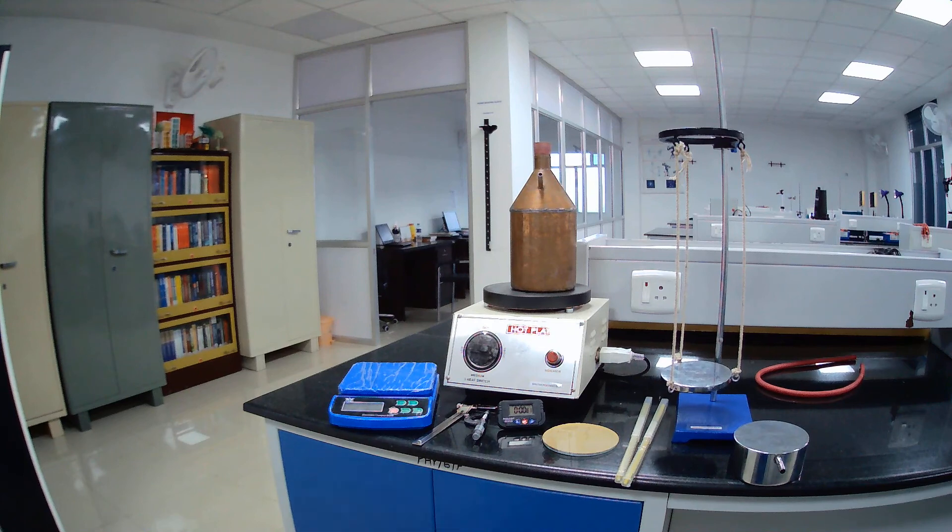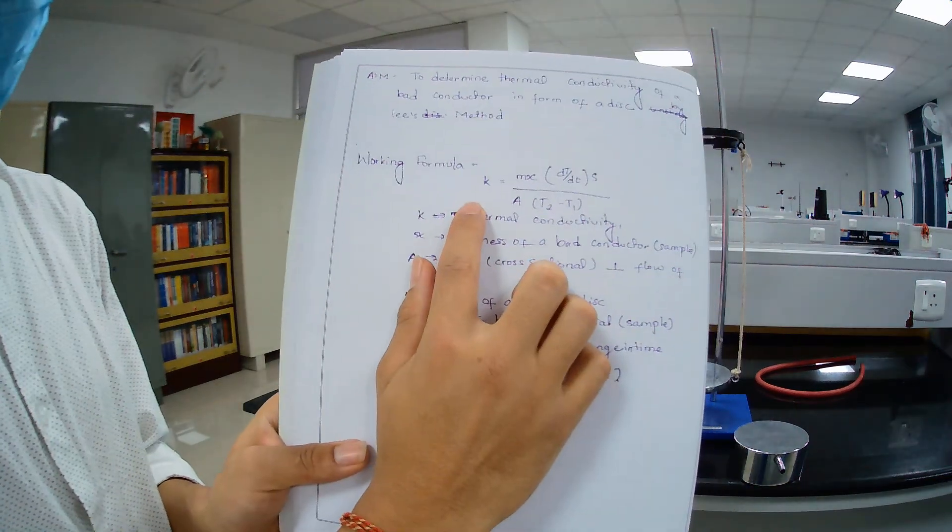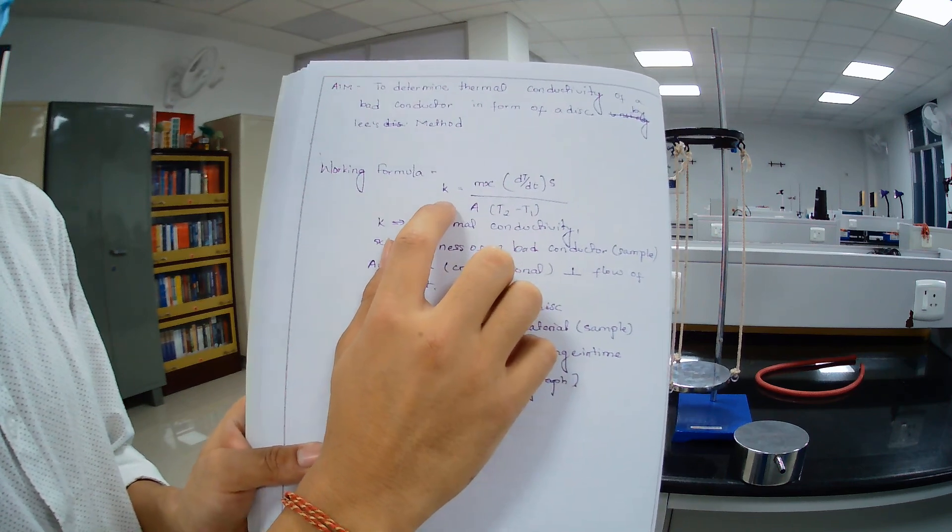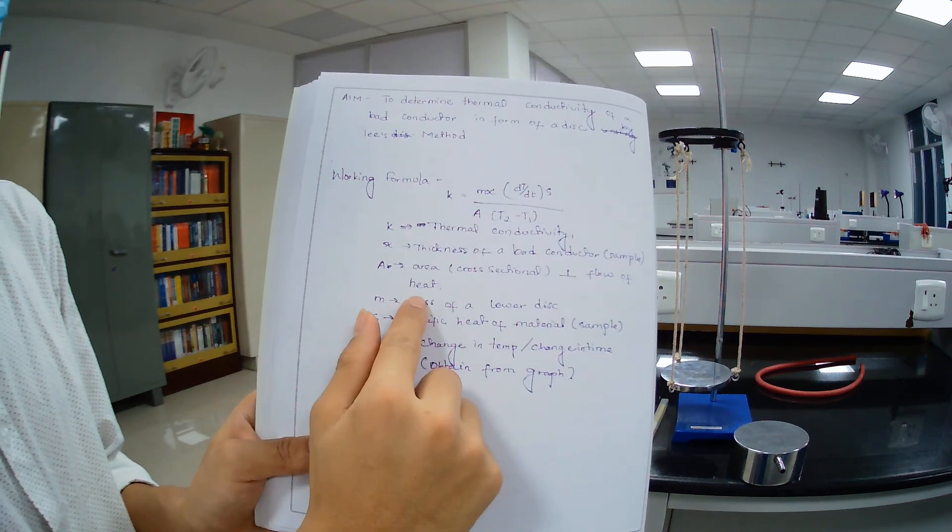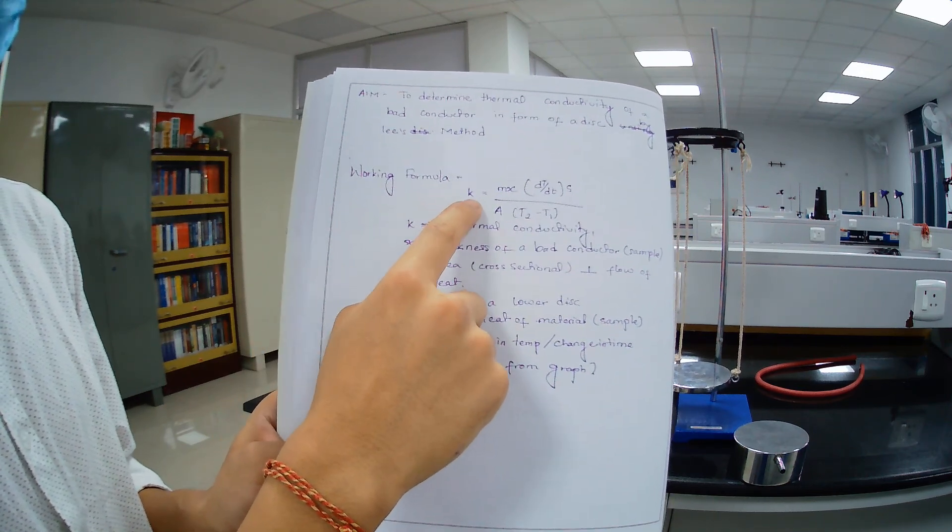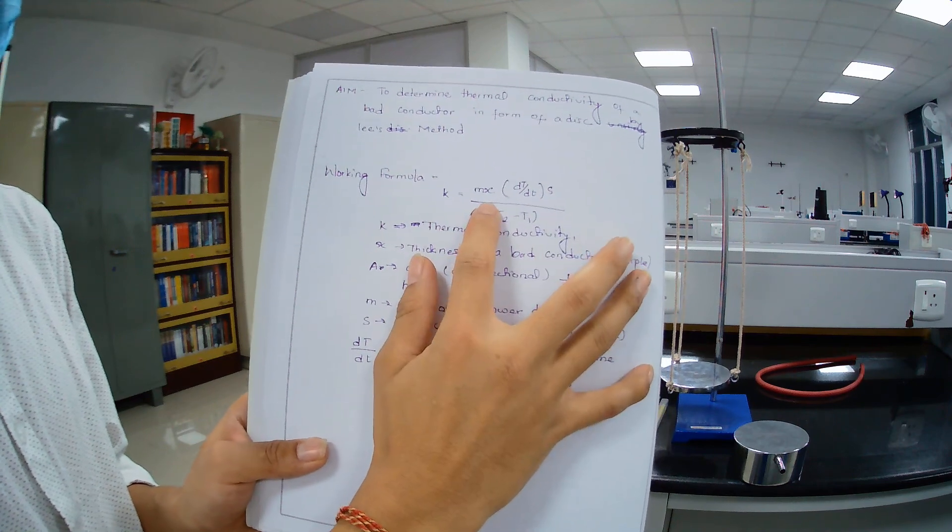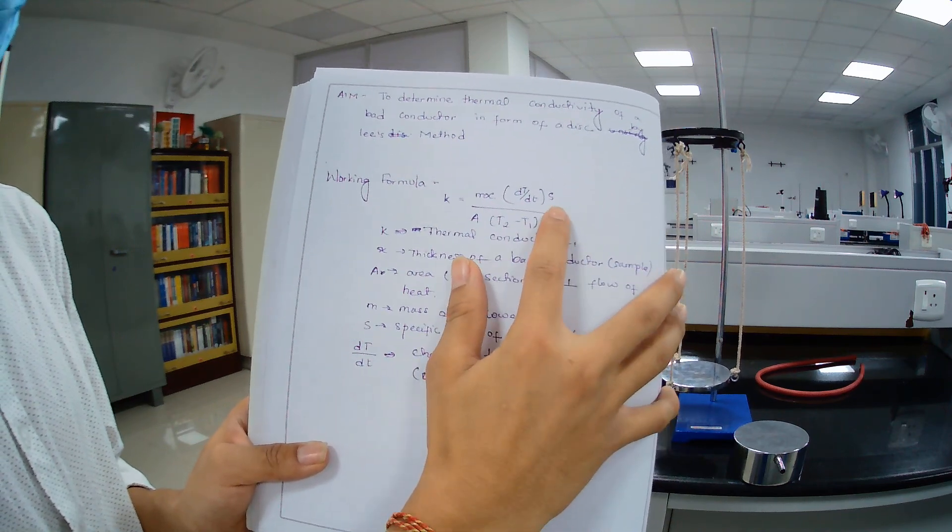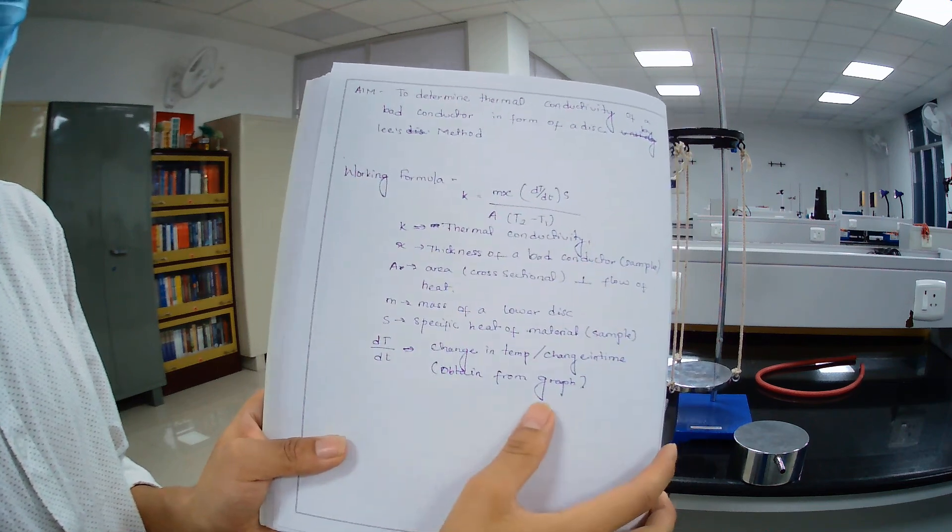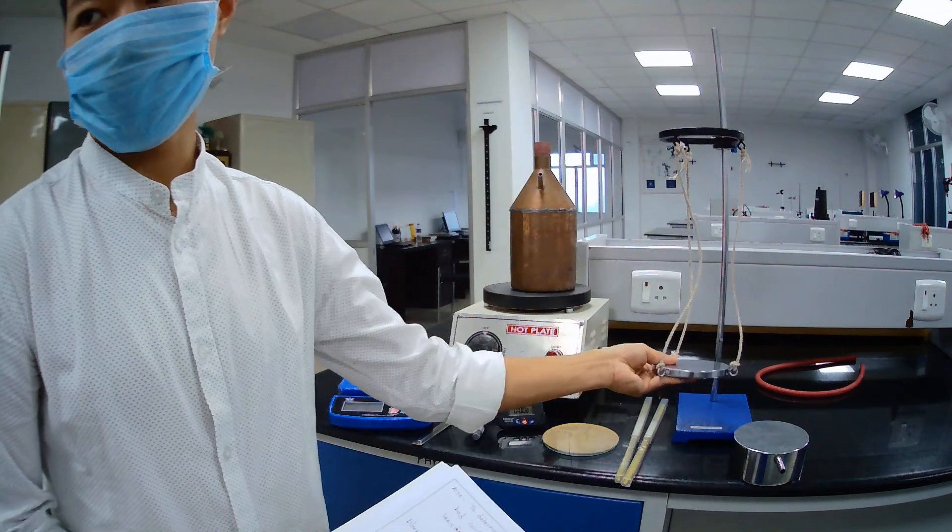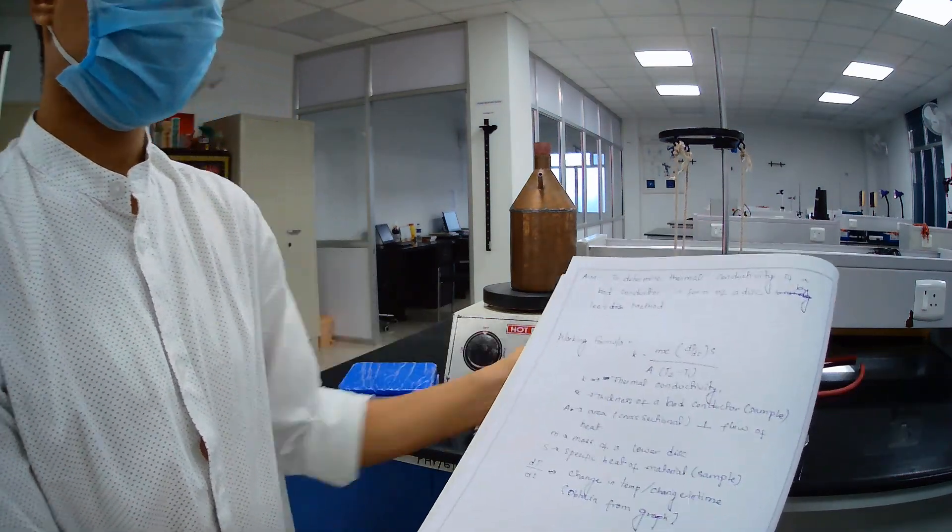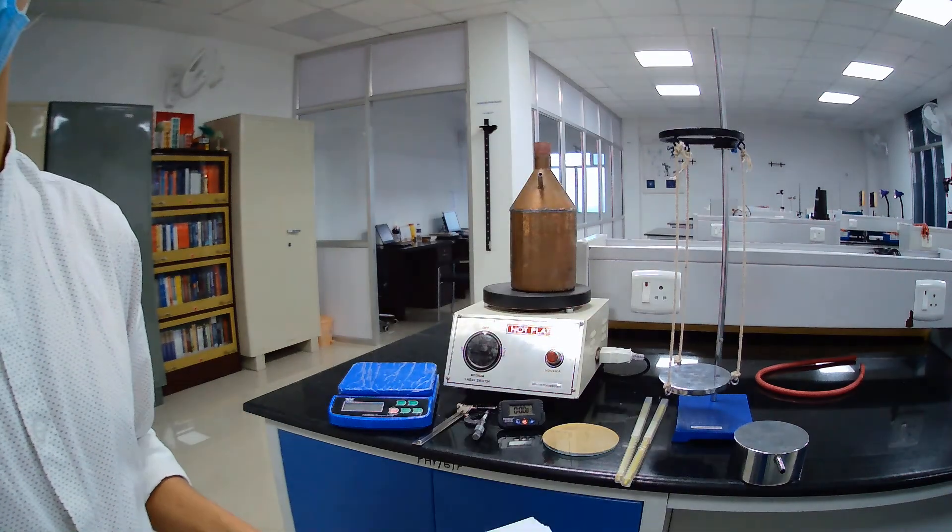Next is working formula. We have k, this k is thermal conductivity. This experiment is to measure this value of k. K equals to m times x times dT/dt times S divided by A times (T2 minus T1). This m is mass of the disk and x is thickness of sample.